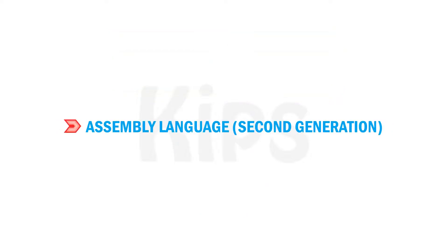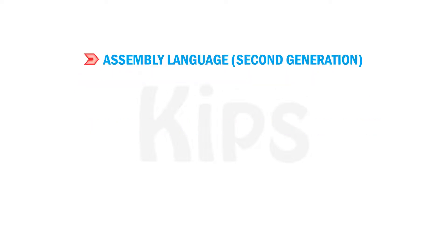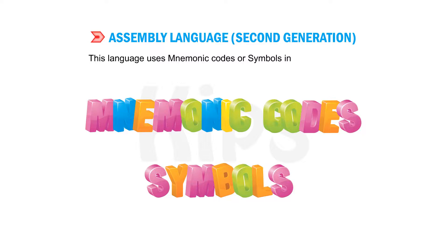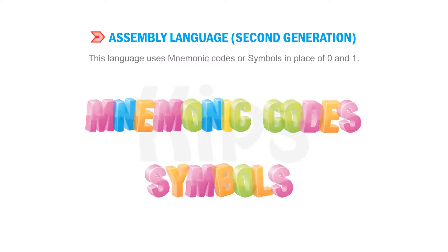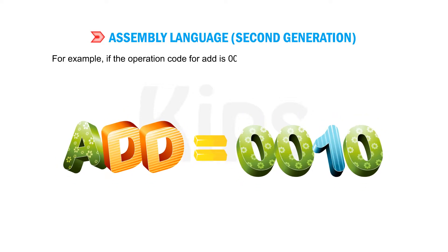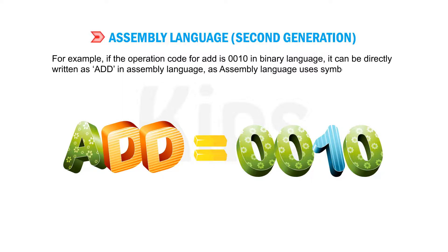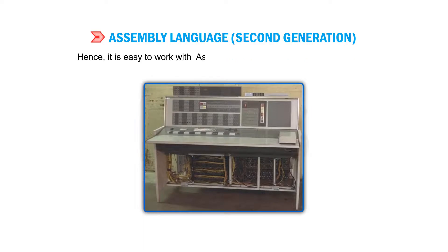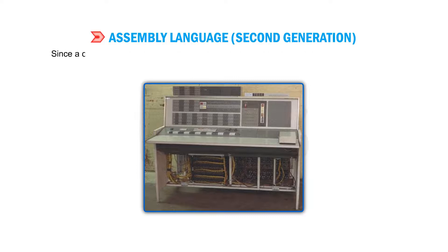Now let me tell you about assembly language — second generation language. This language uses mnemonic codes or symbols in place of zero and one. For example, if the operation code for add is 0010 in binary language, it can be directly written as ADD in assembly language. Since assembly language uses symbolic codes, it is easier to work with than binary language.